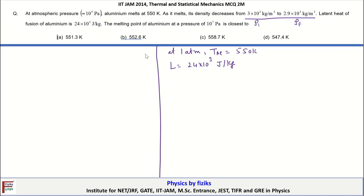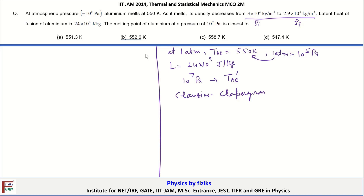We are asked: when the pressure is 10⁷ Pa, what is the melting point of aluminium? We solve this using the Clausius-Clapeyron equation: dP/dT = L / (T(v2 − v1)), where v2 and v1 are the specific volumes. Multiplying numerator and denominator by mass M gives dP/dT = ML / (T(V2 − V1)).